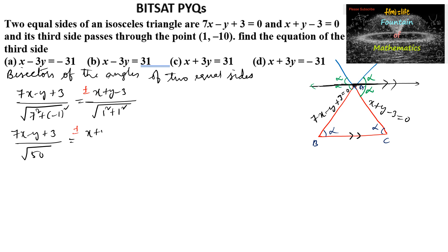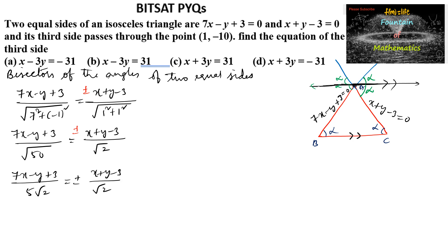We can write root 50 as 5 root 2. So 7x minus y plus 3 upon 5 root 2 is equal to plus or minus x plus y minus 3 upon root 2. Cancelling root 2 and doing cross multiplication, we get 7x minus y plus 3 is equal to plus or minus 5 times of x plus y minus 3.